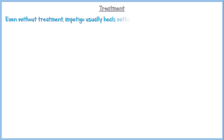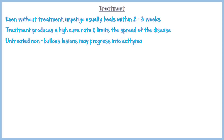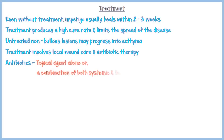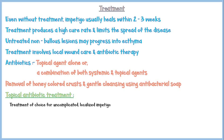Even without treatment, impetigo usually heals within 2–3 weeks; however, treatment produces a high cure rate and limits spread of the disease, and rarely, untreated non-bullous impetigo may progress into ecthyma. Treatment involves local wound care and antibiotic therapy — either topical agent alone or a combination of both systemic and topical agents. Removal of the honey-colored crusts and gentle cleansing with an antibacterial soap is essential before applying the topical agent. Topical antibiotic treatment is the treatment of choice for uncomplicated, localized impetigo.